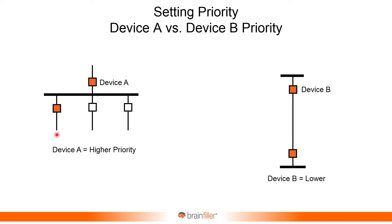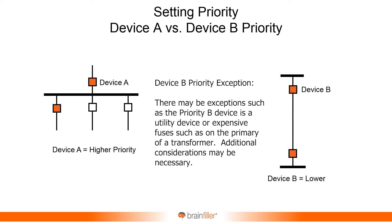If the event is right at the feeder, you want the best coordination possible between the feeder and the main. Because if the main trips, you've not just isolated that one feeder — you've also taken out all the other circuits. That's undesirable; you have a wider-spread outage. Whereas a B priority is where you have one device feeding only one other device. In that case, if either one of those devices trips, you're losing the same load — the same panel.